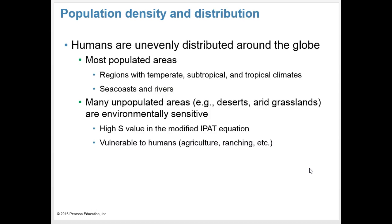Humans are unevenly distributed around the globe. Demographers study population density and distribution. Humans are clumped in the way they're distributed — clumping is an uneven distribution. We tend to clump around places that have a lot of water or more mild climates, and less in places like deserts or tundra with more extreme temperatures. However, even though populations may not be large in certain areas like deserts, arid grasslands, and tundra, they can actually be more sensitive — having a high S value for sensitivity in the IPAT equation — and would be vulnerable to human activities like agriculture and ranching.